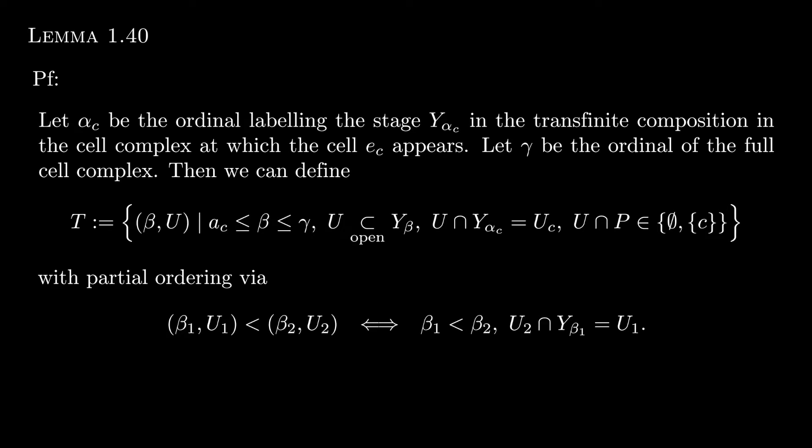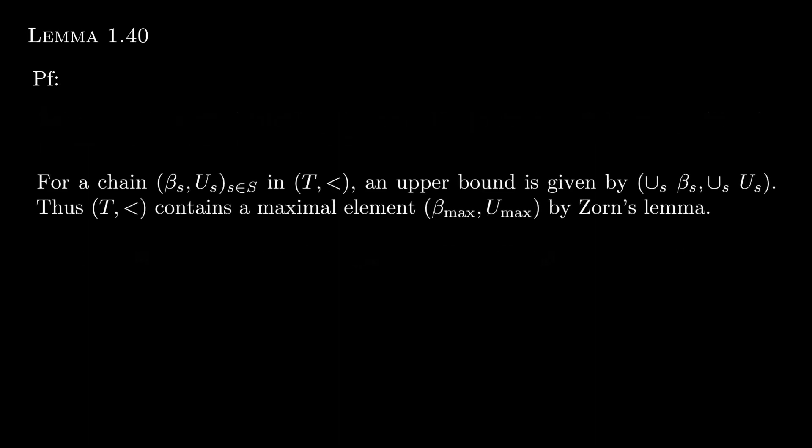And one of the benefits of this construction is that we can impose the following partial order. The reason we wanted to have a partial order was to show that we can extend this all the way. We can extend this open neighborhood that we had originally around C constructively all the way up to the full cell complex, which happens at the stage gamma. So using this technical result, Zorn's Lemma, we can say that there is a maximal element for any chain. And so there's a maximal element for the entire set T.